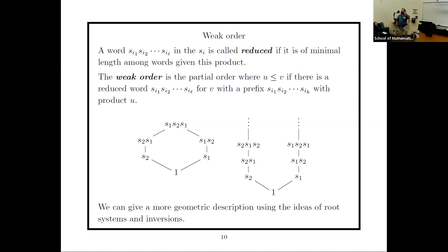For any Coxeter group, there are formulas for the geometric representation: simple root vectors α₁ through αᵣ where sᵢ negates αᵢ and preserves αᵢ⊥ in the dual. Regarding the signature question: positive-definite signature corresponds to finite type, positive semi-definite to products of affine and finite types, and hyperbolic is roughly many pluses and one minus. When mᵢⱼ = ∞, the Cartan matrix entry aᵢⱼ can be chosen freely (less than −2), which can change the signature.